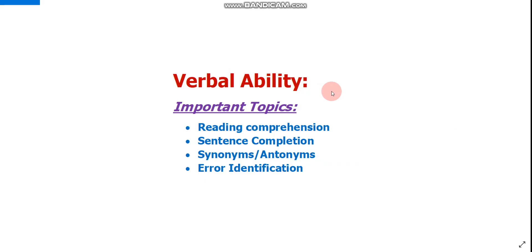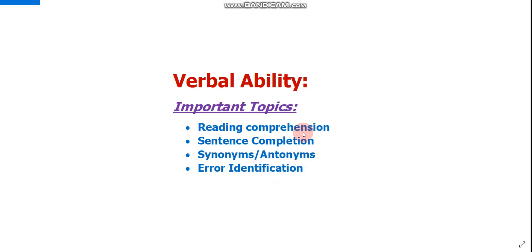First, let's talk about Verbal Ability. These are some important topics you must prepare. Search reading comprehension on Google and do practice of at least five questions on each of these four topics: Reading Comprehension, Sentence Completion, Synonyms and Antonyms, and Error Identification. These are the important topics you will definitely face during your TCS NQT exam.